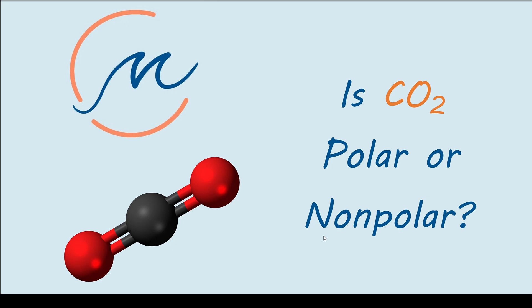Let's get started by drawing the Lewis dot structure. Carbon dioxide has 2 oxygen atoms. Each oxygen atom has 6 electrons and since we have 2 of them, we have 12 electrons from the oxygens.